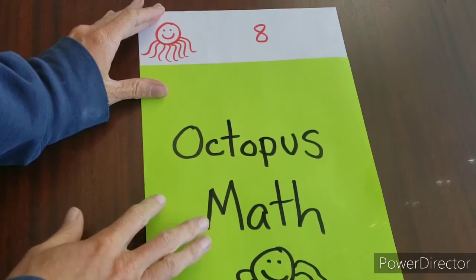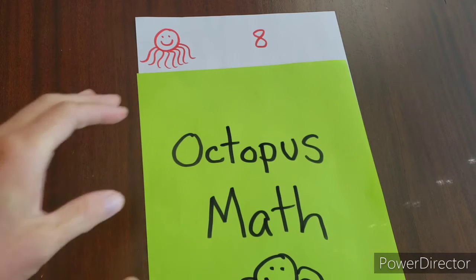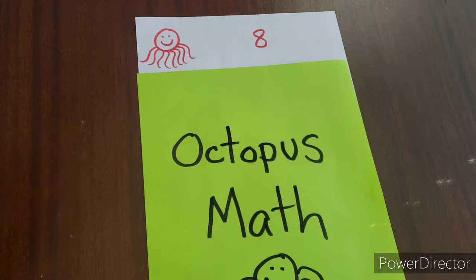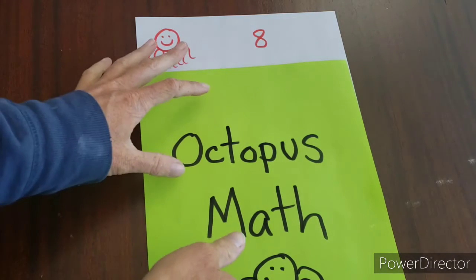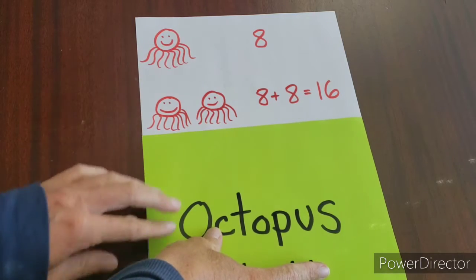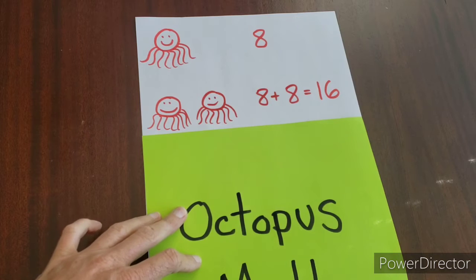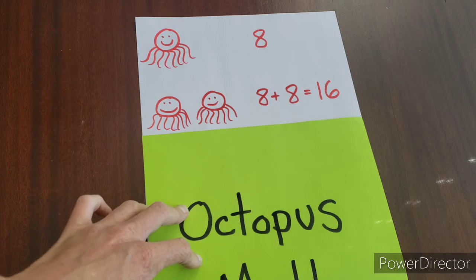So we know that one octopus has eight legs, right? What about if we have two octopuses, or octopi, is how you say more than one octopus. If we have two of them, we have eight plus eight. And we know that from doing our double facts that eight plus eight is 16.